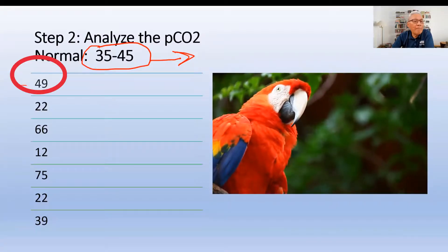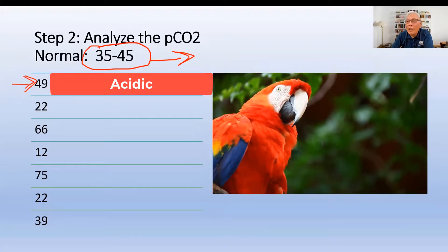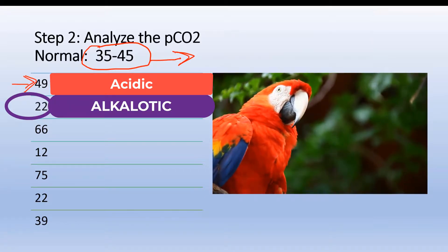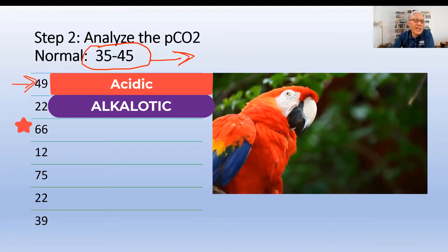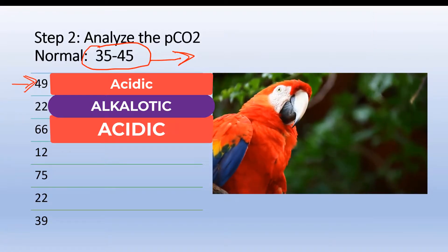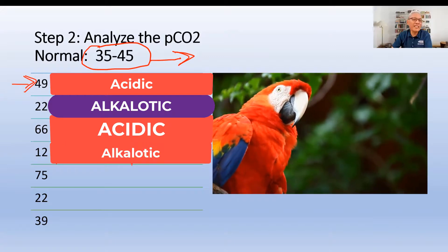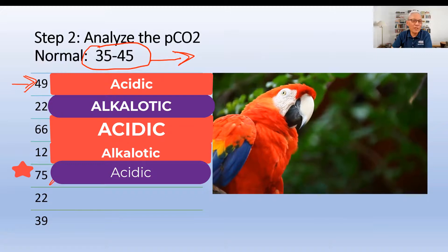Say now that I have a PCO2 of 49 — is this normal, acidic, or alkalotic? With only 22 granules in my coffee, will it be acidic, alkalotic, or normal? Alkalotic — it's not enough, it's too weak. How about 66? Acidic, there's too much coffee. How about 12? Alkalotic, it's not enough. And how about 75? Acidic, there's too much coffee.